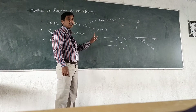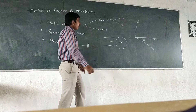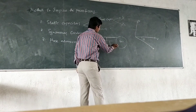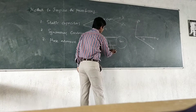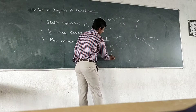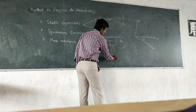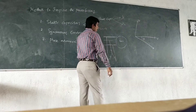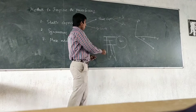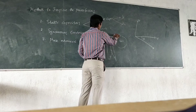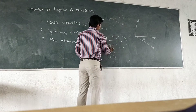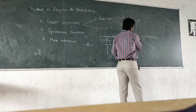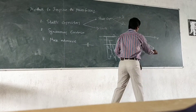We can connect the capacitor banks in star as well as delta. This is the main current IL and the capacitor current IC. Due to this capacitor current, there is a leading component of current.